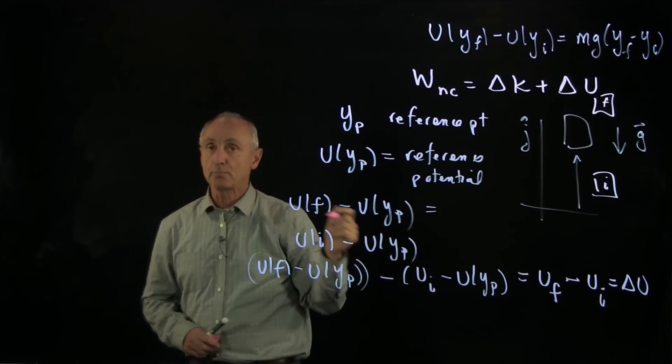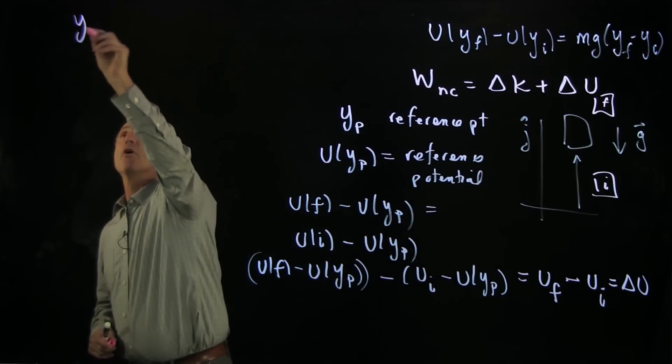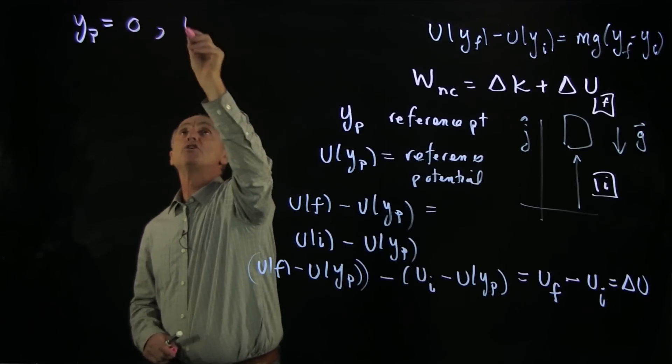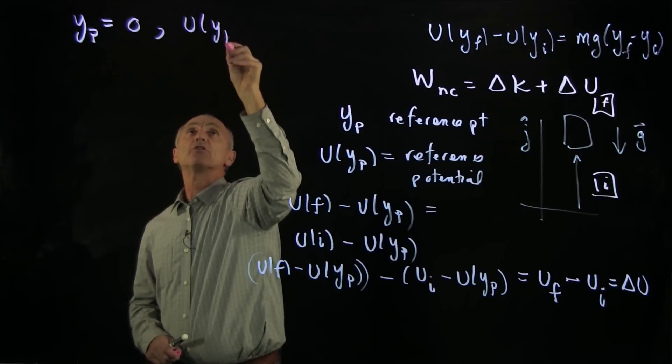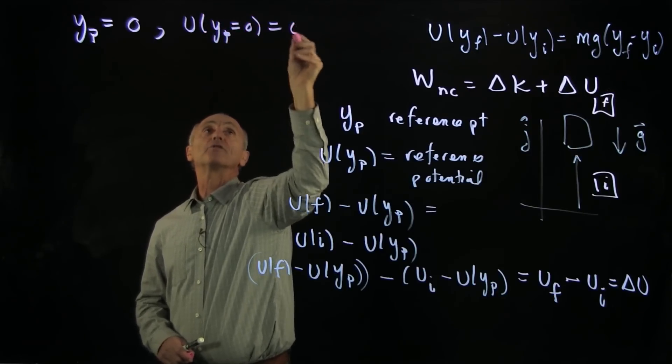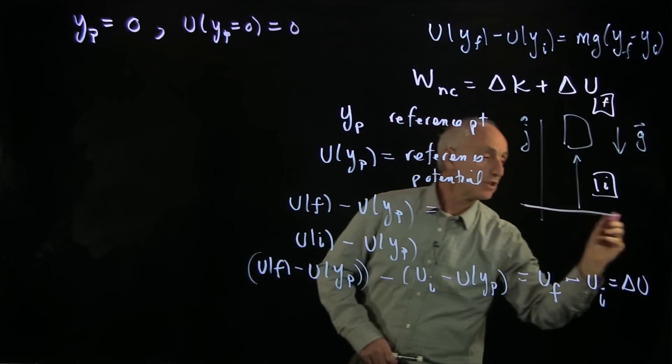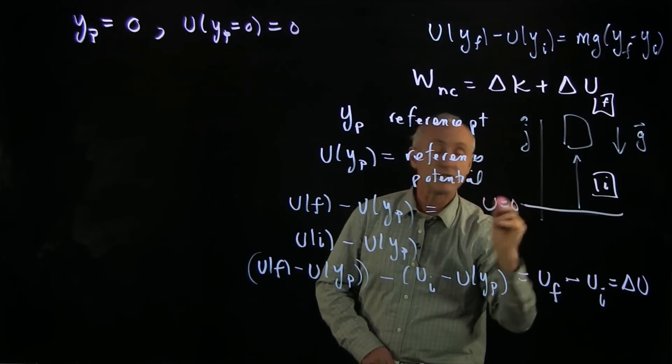So for our gravitational problem, we will choose Y reference point to be 0, and we'll choose the potential energy at this reference point also to be 0. So our reference potential at the origin is 0.